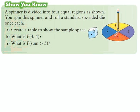The second question says a spinner is divided into four equal regions. You spin the spinner and roll a standard six-sided die, each once. Create a table — not a tree diagram — to show the sample space. Tables are used when there are only two events. If you have three events, like rolling a die, spinning a spinner, and flipping a coin, you would have to use a tree diagram.